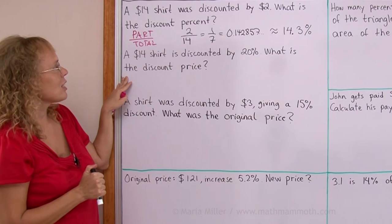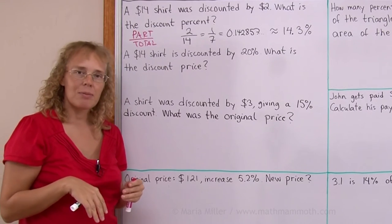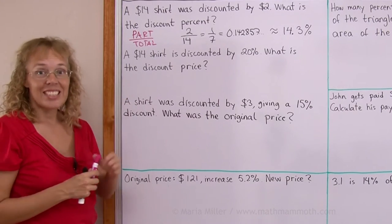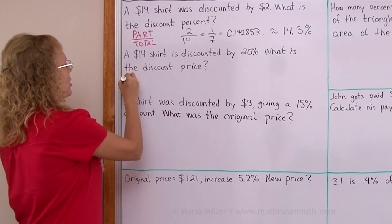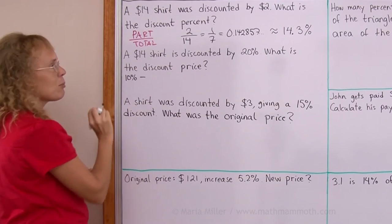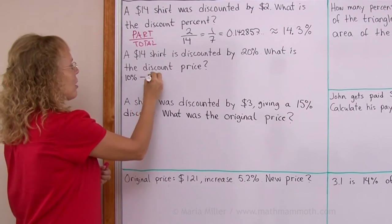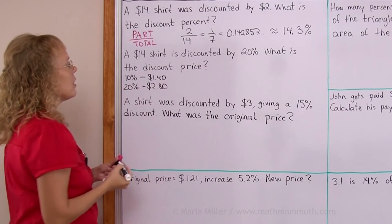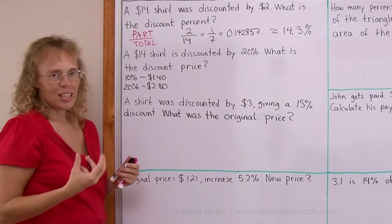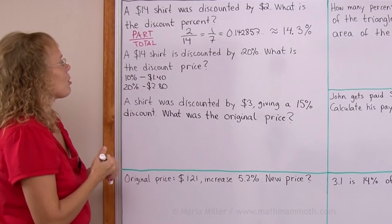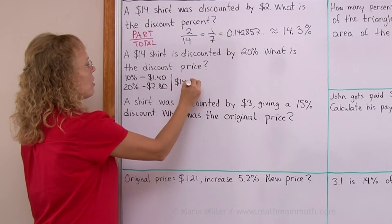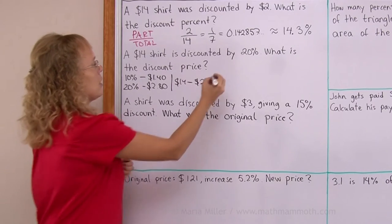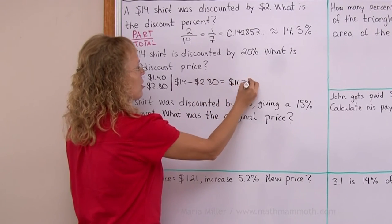Now here, the shirt is discounted by 20 percent. What is the discount price? I usually solve this kind of a problem using mental math, calculating first 10 percent. 10 percent is easy to calculate. You divide that by 10, so that's $1.40. And 20 percent is double that, $2.80. And so it's discounted, so we subtract that much from the price and we get $14 minus $2.80, which is $11.20.